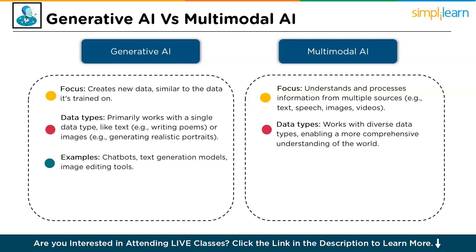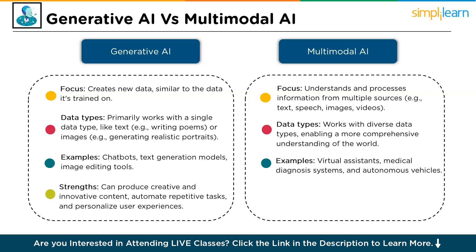Examples of generative AI include chatbots, text generation models and image editing tools. Whereas multimodal AI examples cover virtual assistants, medical diagnosis systems and autonomous vehicles. Generative AI strengths include producing creative and innovative content, automating repetitive tasks and personalizing experiences. Multimodal AI strengths include providing a more human-like understanding of the world and improving accuracy. In essence, generative AI excels at creating new data, while multimodal AI excels at understanding and utilizing existing data from diverse sources. They can be complementary, with generative models used to create new data for multimodal AI systems to learn from and improve their understanding of the world.